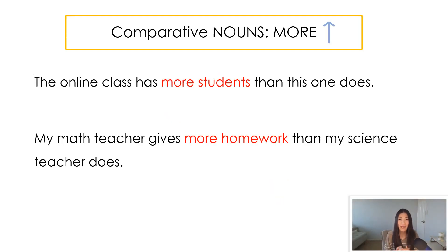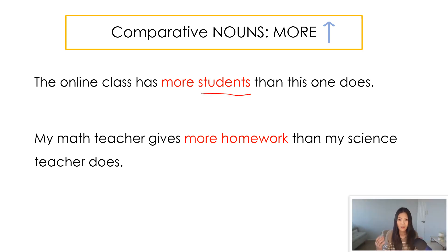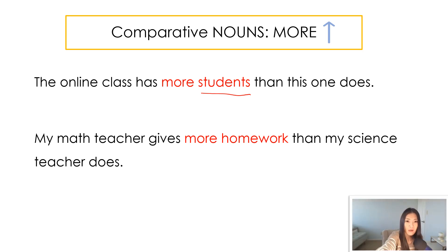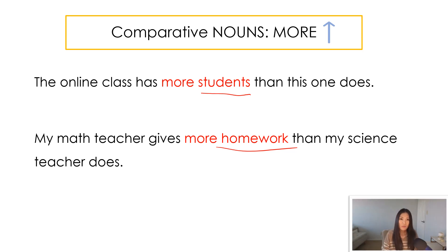What do I mean by comparative nouns? We're going to have a noun after the comparative word 'more.' For example: 'The online class has more students than this one does,' or 'My math teacher gives more homework than my science teacher does.' So when it comes to comparative nouns, when the amount increases, it's very easy — all you have to do is add the word 'more' and you're good to go.